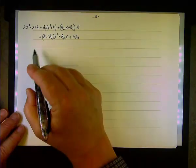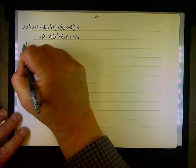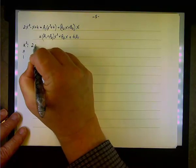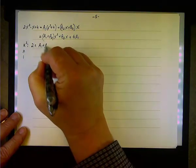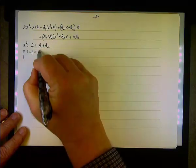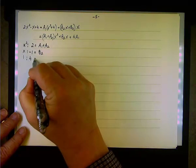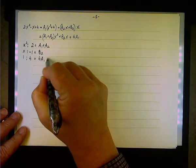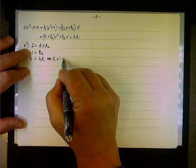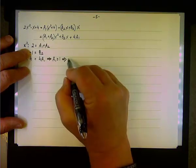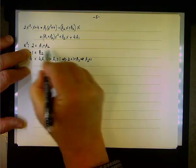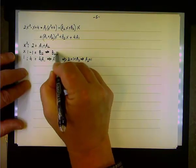Comparing coefficients: for x², the left side is 2 and the right is A1 + A2; for x, the left is −1 and the right is B2; for the constant, the left is 4 and the right is 4A1. So right away we get A1 = 1, and since 2 = 1 + A2, we get A2 = 1 as well. And B2 = −1 directly.